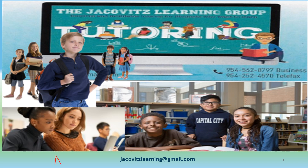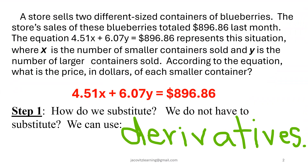We're going to do an SAT math problem. There's a really long explanation for this question and there's a really short one, so let's do the short one. A store sells two different sized containers of blueberries. The store sales of these blueberries total $896.86. The equation 4.5x plus 6.07y equals 896.86 represents a situation where x is the number of the smaller containers and y is the number of the larger containers.